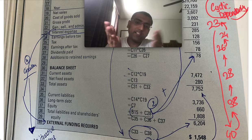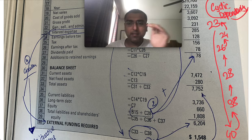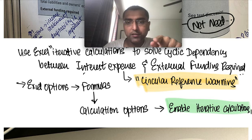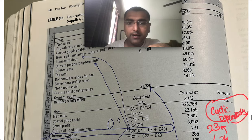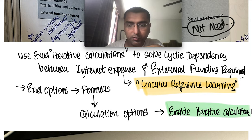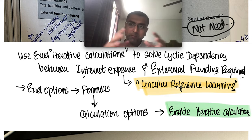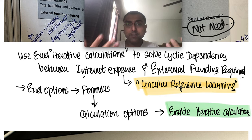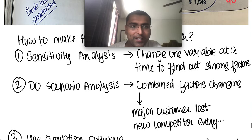To solve the circular dependency in Excel, one way is to manually iterate until you get to zero — where you find the right funding. But there's a better way: enable iterative calculations in Excel. Go to Excel Options → Formulas → Calculate Options and enable iterative calculation. The circular reference warning will be removed. Excel will take a guess, measure how far off it is, and keep refining — essentially automating what you'd do manually.